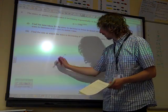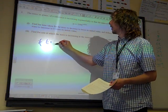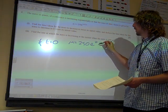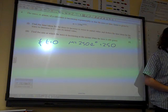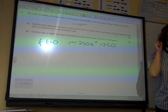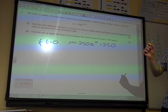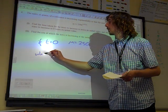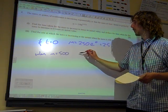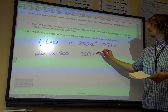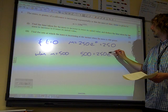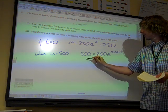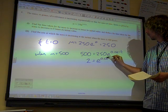When t is 0. So when t is 0, m is 250e to the 0, which is 250 since e to the 0 is 1. So its initial value is 250. Twice its initial value is 500. So 500 equals 250e to the 0.021t, which gives us 2 equals e to the 0.021t.